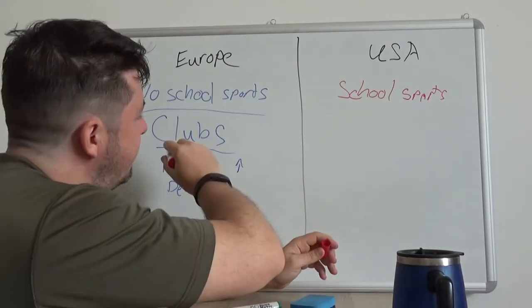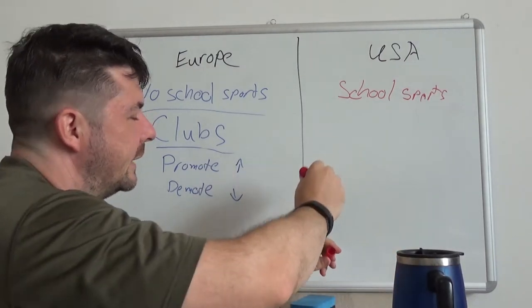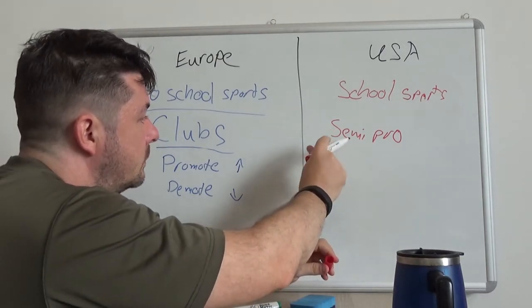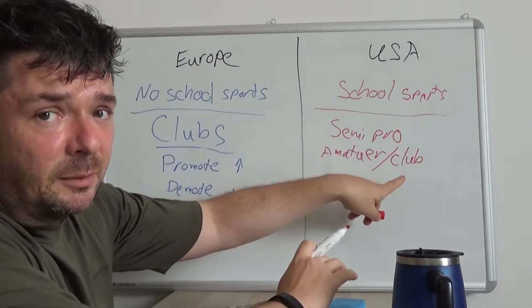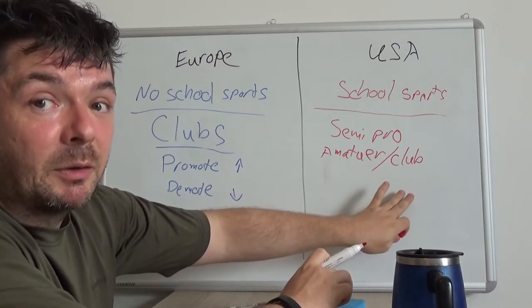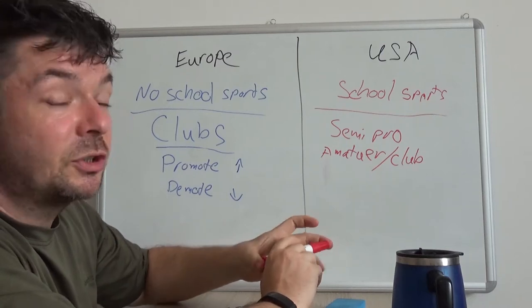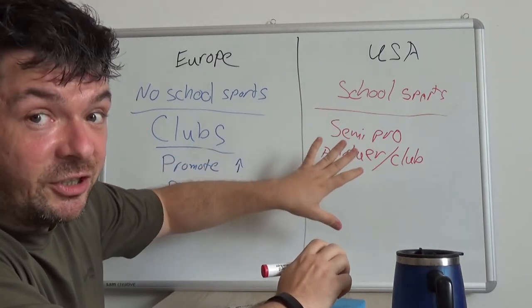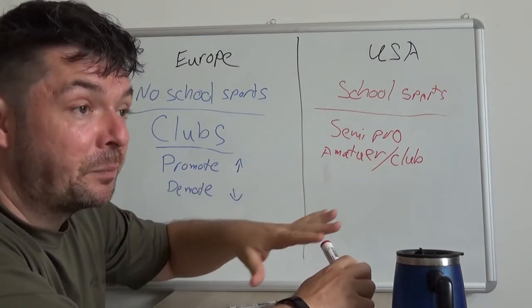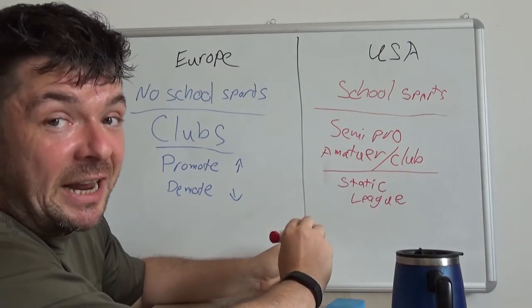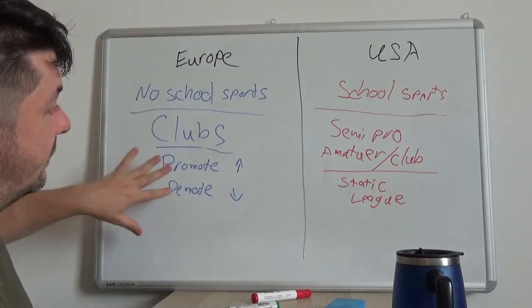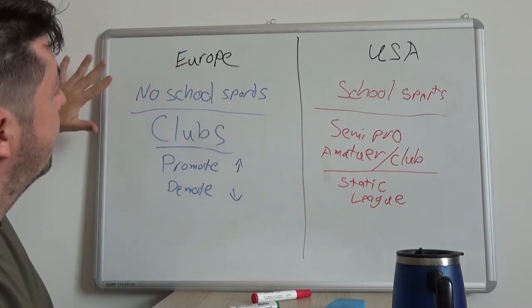In the USA there are school sports. Club sports they don't really exist in the United States. In terms of American football it's called semi-pro. There is a thing called amateur and club sports, but when I was living back in the States a lot of people would talk about club soccer because the high school for teenage years didn't have a soccer team. That's a static league.